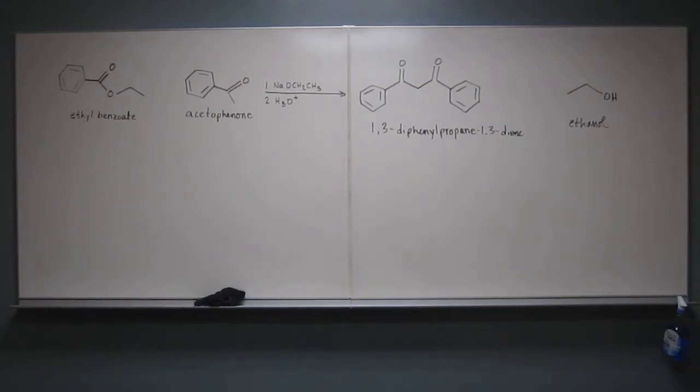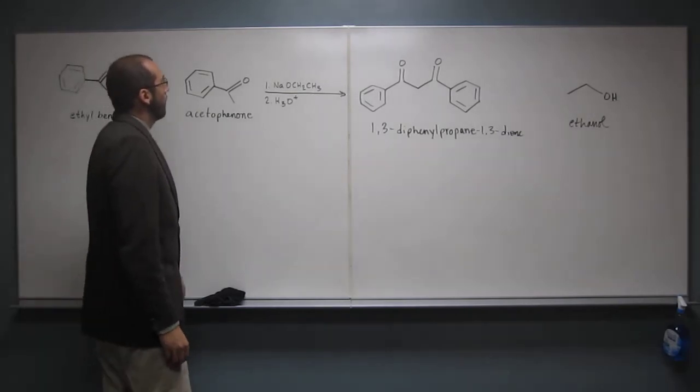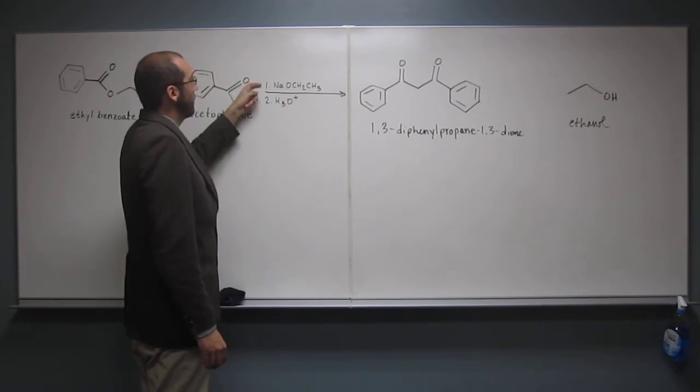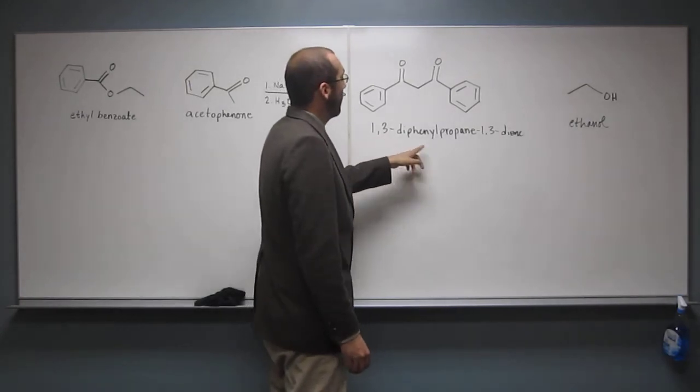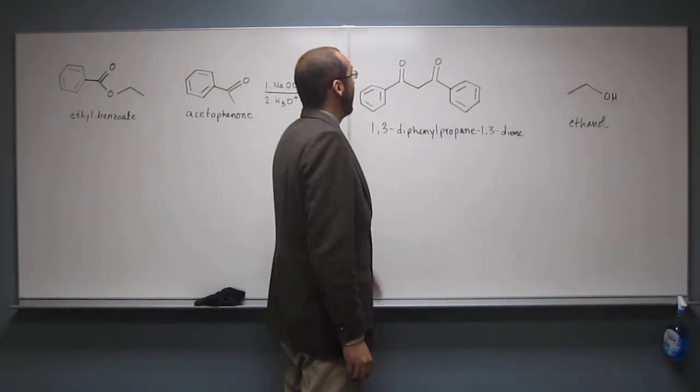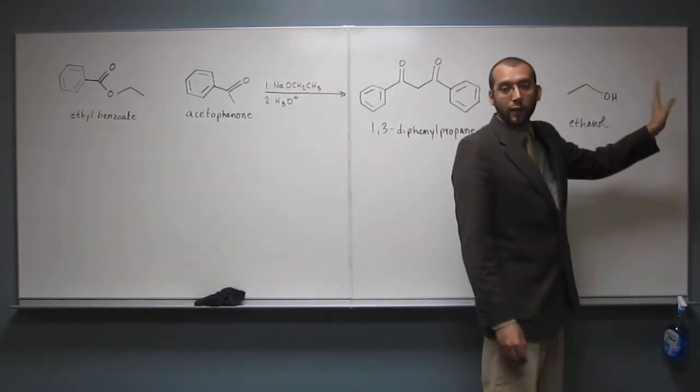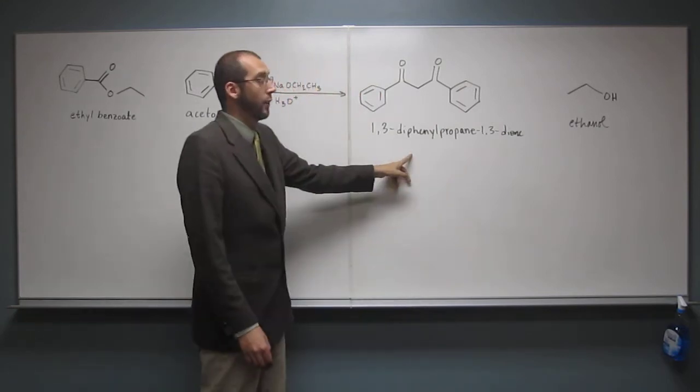Okay, so let's try this one. It says draw the mechanism for the following Claisen condensation, and then it shows you these molecules up here. Ethylbenzoate and acetophenone are reacting with sodium ethoxide first, and then the second step is acid to make 1,3-diphenylpropane-1,3-dione, which is this diketone, and then ethanol, which is kind of the side product. This is the stuff we're really looking for. That's the Claisen condensation product.